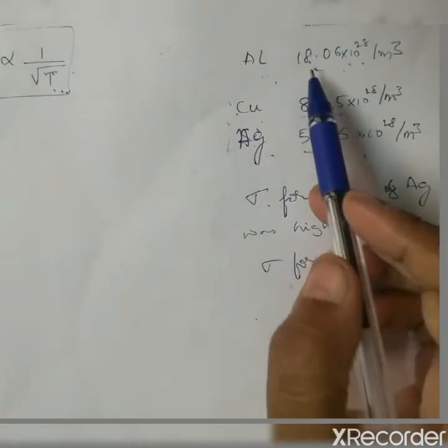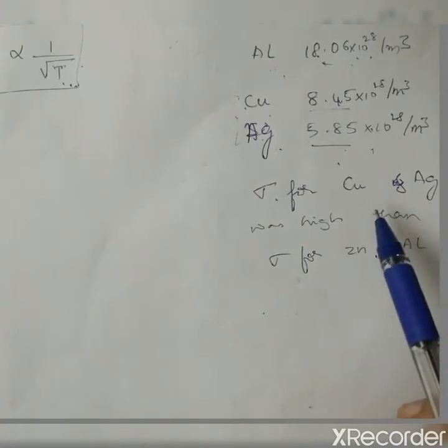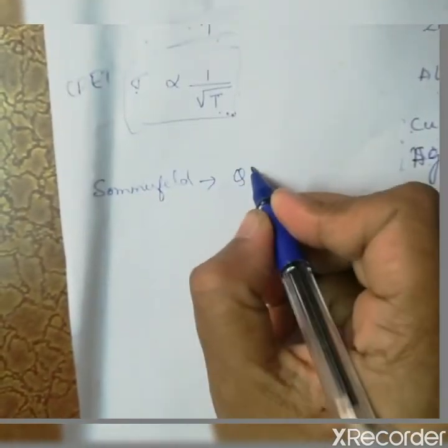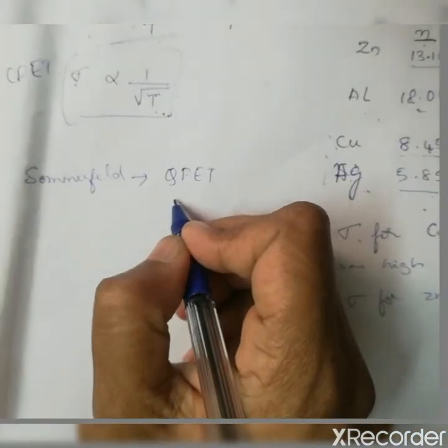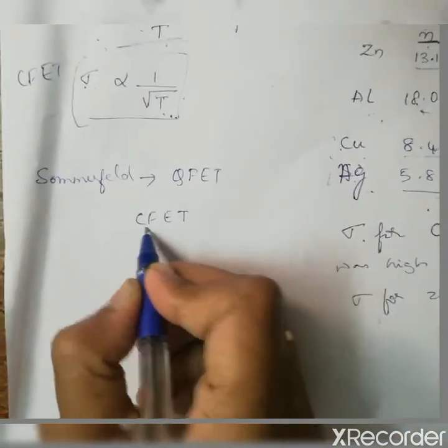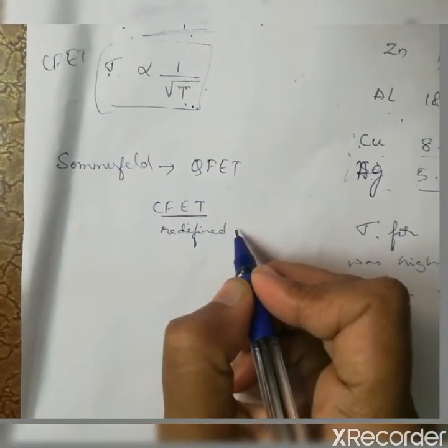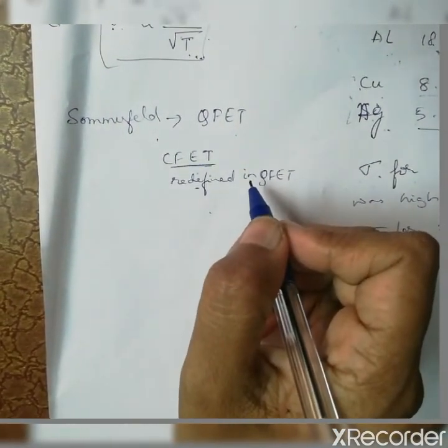Because of these failures, Sommerfeld proposed a new theory called the Quantum Free Electron Theory (QFET). The assumptions made in CFET were redefined in QFET by Sommerfeld, and he developed his quantum free electron theory based on the Pauli exclusion principle.